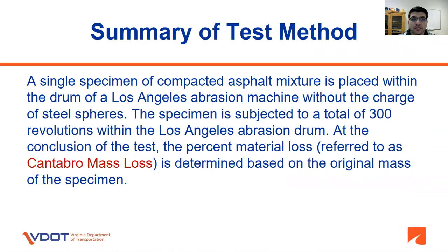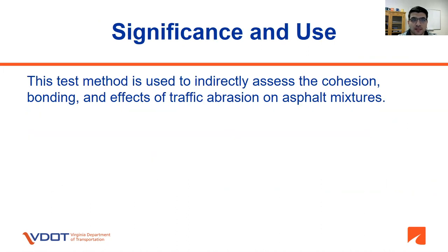In summary, a single specimen of compacted asphalt mixture is placed within the drum of a Los Angeles abrasion machine without the charge of steel spheres. This specimen is subjected to a total of 300 revolutions. At the conclusion of the test, the percent material loss, referred to as Cantabro mass loss, is determined based on the original mass of the specimen. This test method is used to indirectly assess the cohesion, bonding, and effects of traffic abrasion on asphalt mixtures.